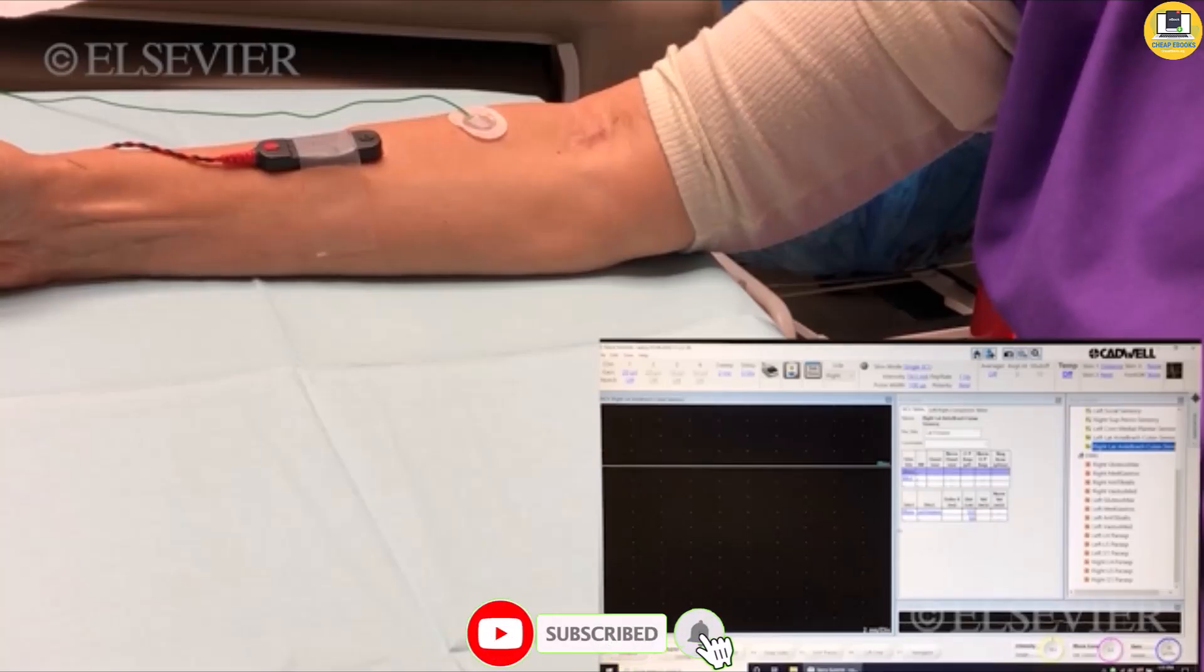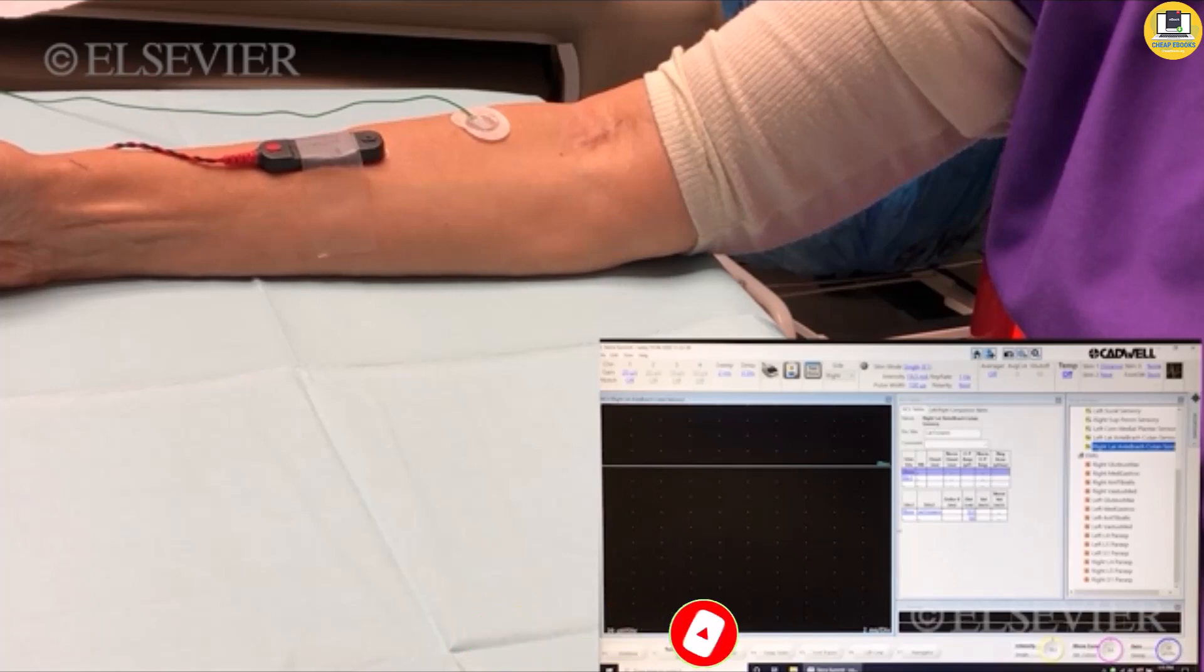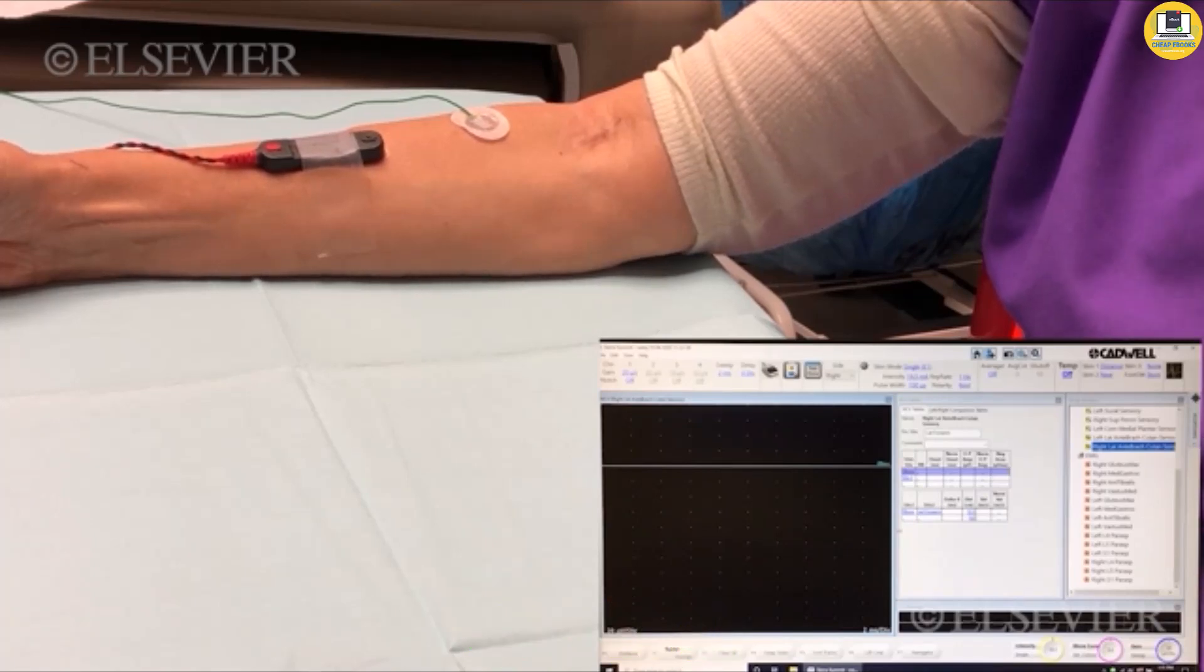Lateral anti-brachial cutaneous nerve studies. These studies can be useful in evaluating brachial plexopathies including lesions of the lateral cord, the musculocutaneous nerve, or the upper trunk.